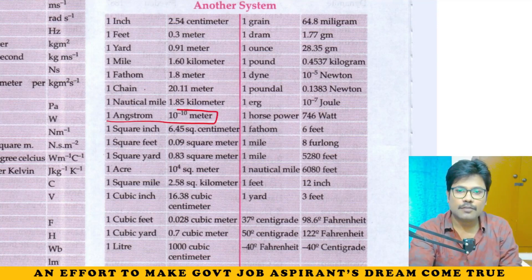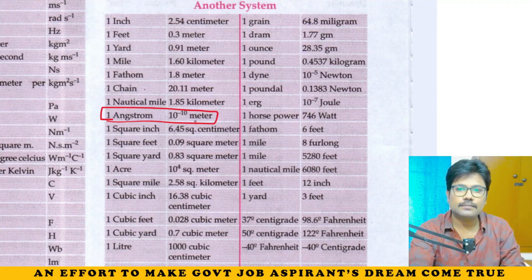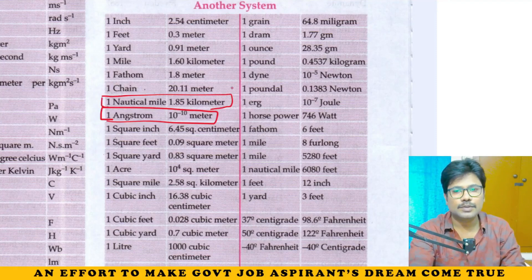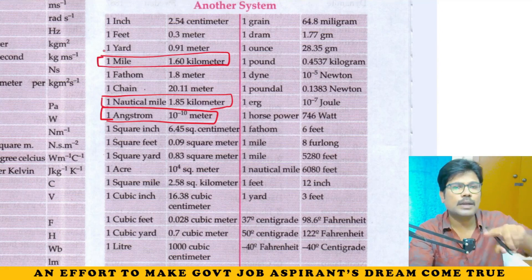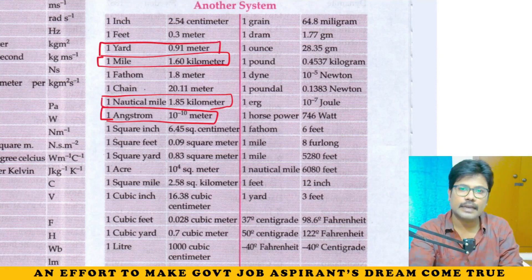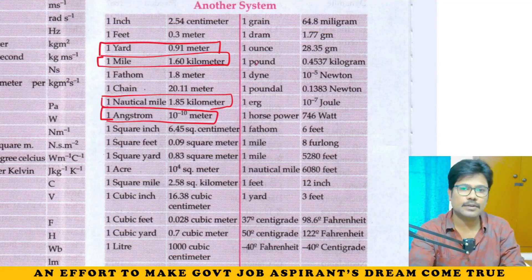One angstrom is 10 to the power of minus 10 meters. One nautical mile is 1.85 kilometers. One mile is equal to 1.6 kilometers. One yard is equal to 0.91 meters.